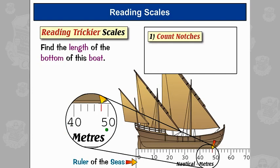So from 40 to 50, there are 1, 2, 3, 4, 5 notches.